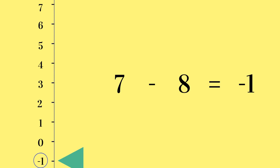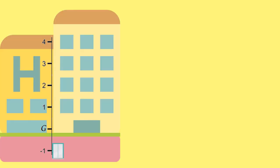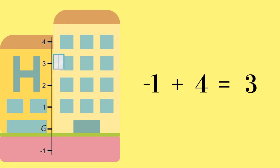Have a go at this question too. In the lift of a hotel, the basement floor is labelled minus 1 and the ground floor is labelled G. If a person gets into the lift in the basement and travels upwards 4 floors, on which floor do they get out? Pause and play when you have found the answer. The answer is the third floor.